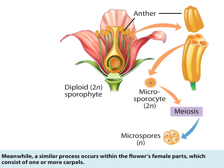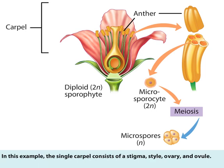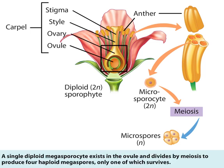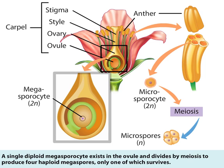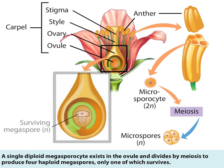Meanwhile, a similar process occurs within the flower's female parts, which consist of one or more carpels. In this example, the single carpel consists of a stigma, style, ovary, and ovule. A single diploid megasporocyte exists in the ovule and divides by meiosis to produce four haploid megaspores, only one of which survives.